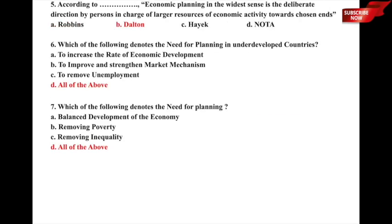Question 5: According to dash, economic planning in the widest sense is the deliberate direction by persons in charge of larger resources of economic activity towards the chosen ends — whether it is a) Robbins, b) Dalton, c) Hayek, or d) none of the above. The correct answer is option b) Dalton.